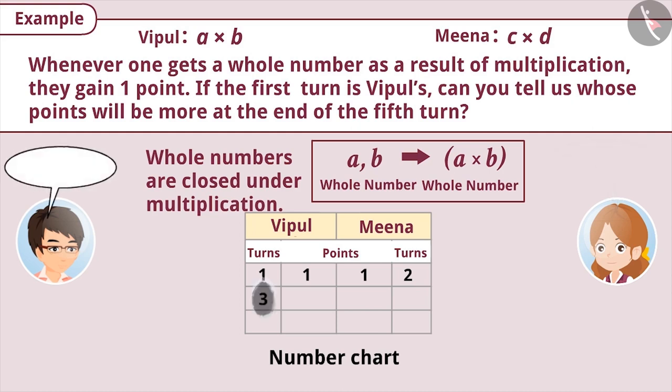Now comes Vipul's turn. Vipul picked the numbers 5 and 2. Will he get one point this time? Think about it. You are right. The result of multiplication of 5 and 2 is 10, which is a whole number. So he will get one point again.